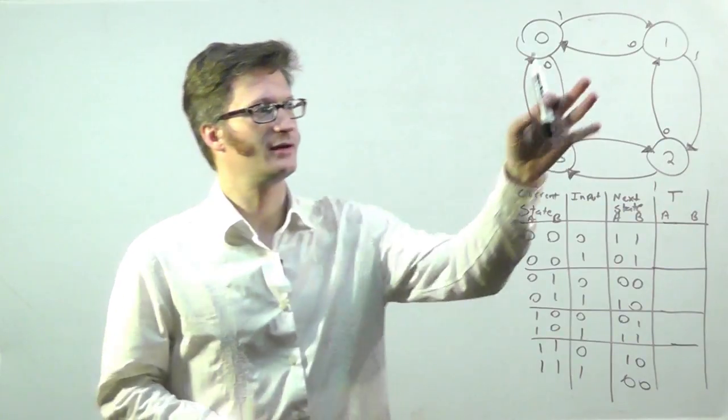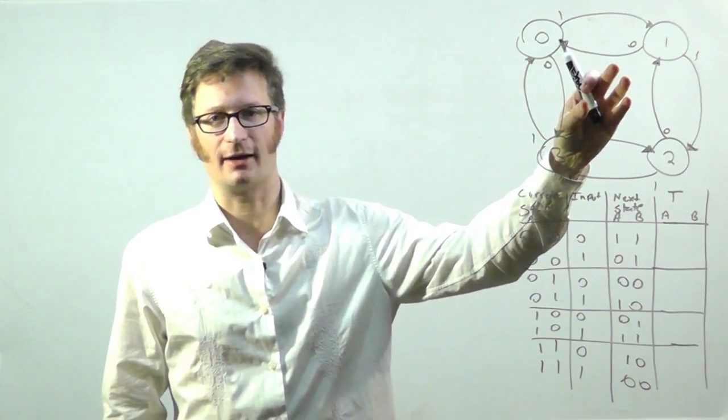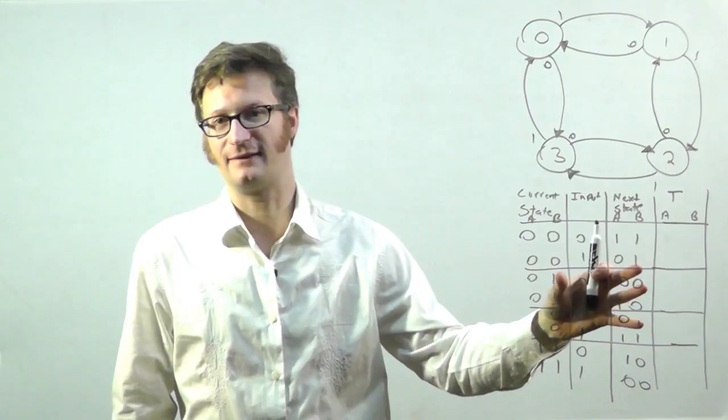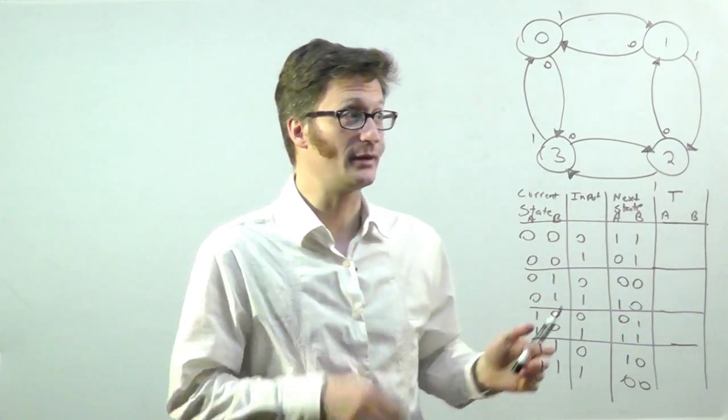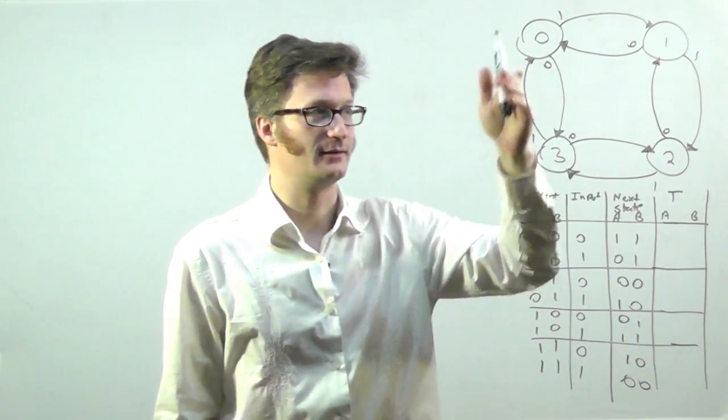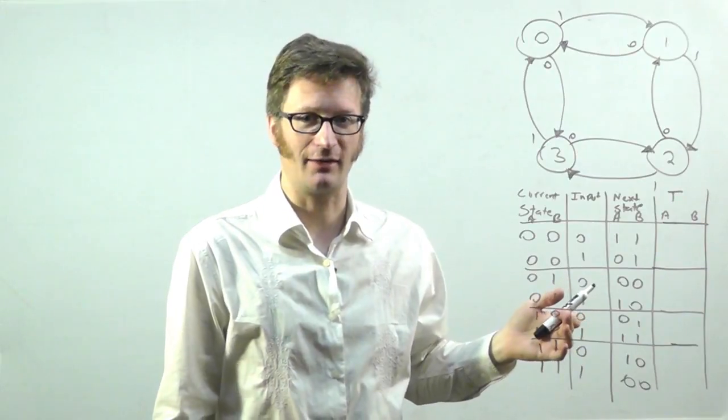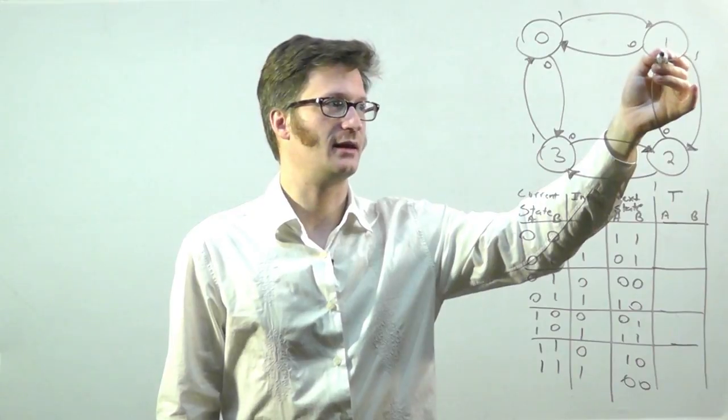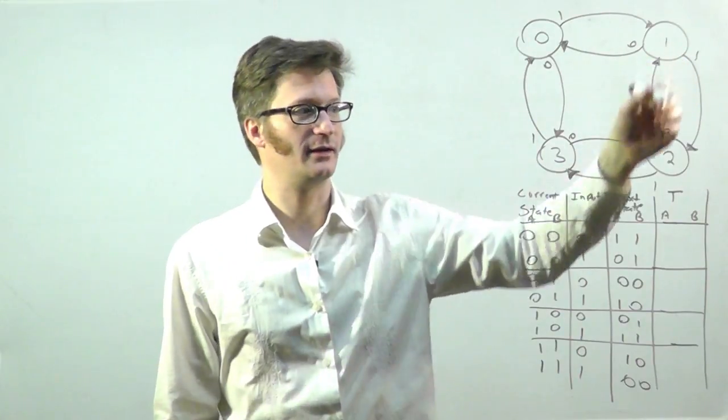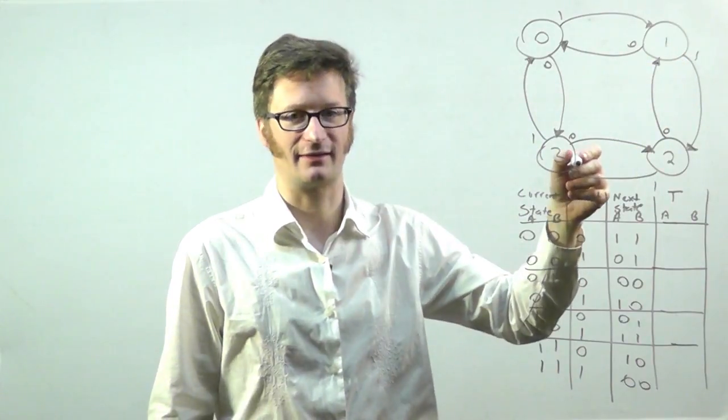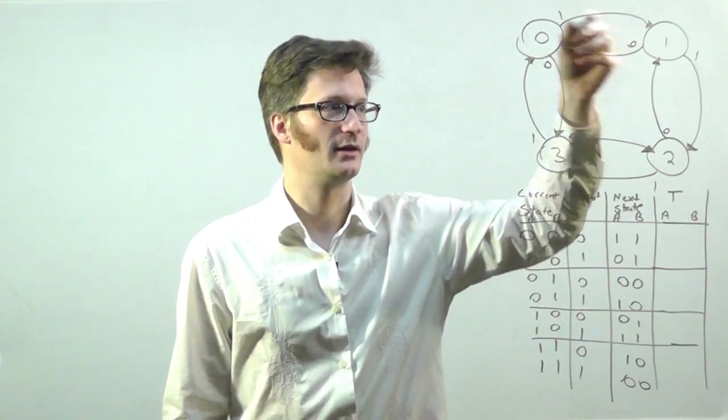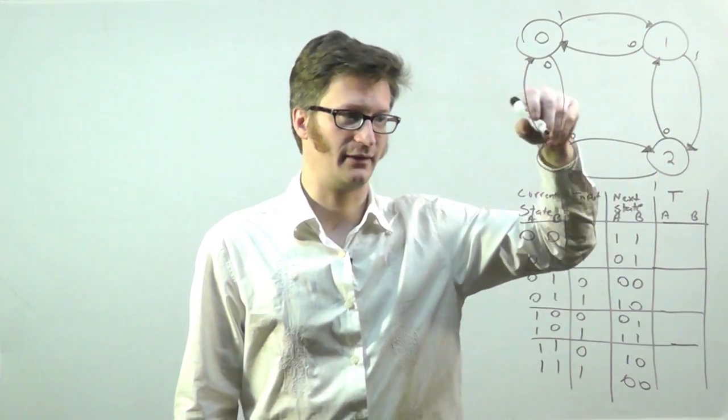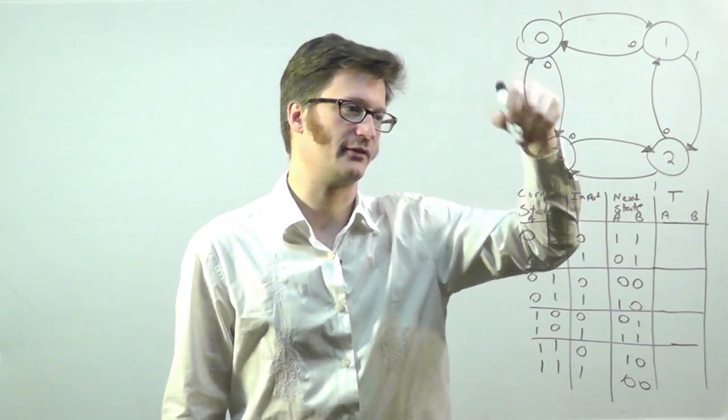All right, so right here I have a state diagram and its associated state table, and what this is is a two-bit up-down-counter. So if I put in an input of one, then it will go around through the states like this, and if I put in a zero, it'll count downward until it underflows and it'll go to three.